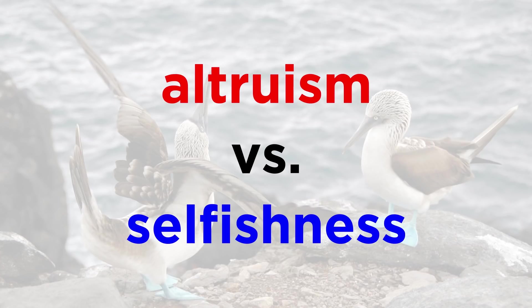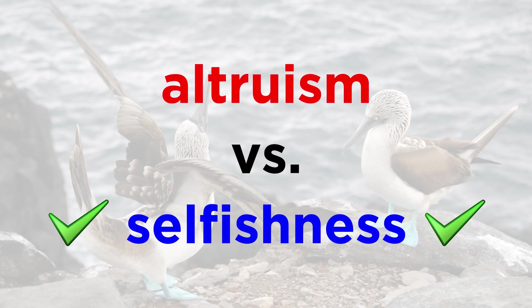As opposed to the evolution of altruistic behaviors, selfishness can increase an individual's benefit at the cost of others. If selfish behavior contributes to increased survival or reproductive success, it is likely to be inherited and passed down to the next generation.